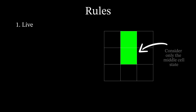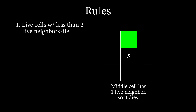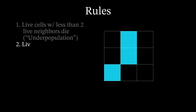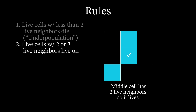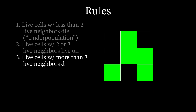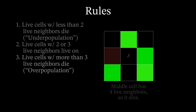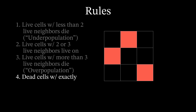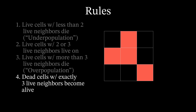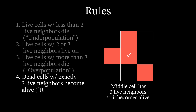Any live cell with less than two live neighbors will die — you can think of this as dying by underpopulation. Any live cell with two or three live neighbors lives on to the next generation. If a cell has more than three live neighbors, it dies, which you can think of as death by overpopulation. And finally, any dead cell with exactly three live neighbors becomes a live cell, as if born by reproduction.